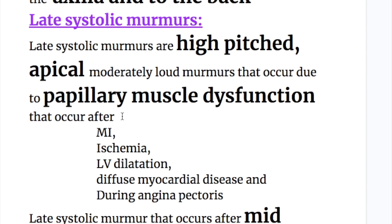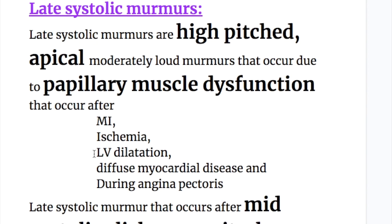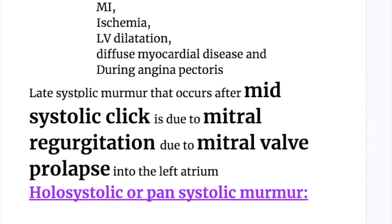Late systolic murmurs are high pitch, apical, and moderately loud murmurs occurring due to papillary muscle dysfunction. This occurs after myocardial infarction, ischemia, left ventricular dilatation, diffuse myocardial diseases, and during angina pectoris. Late systolic murmurs occurring after a mid-systolic click are due to mitral regurgitation caused by mitral valve prolapse into the left atrium.